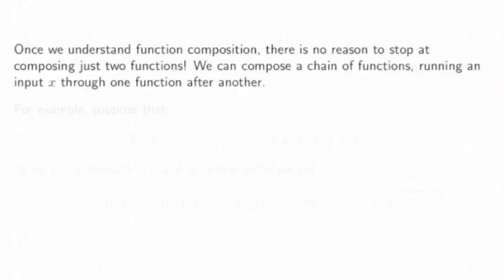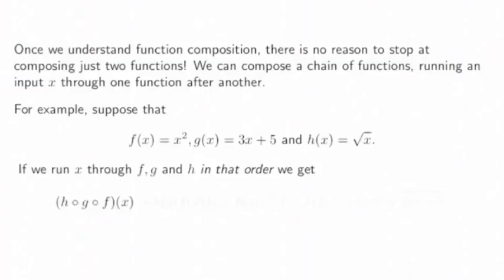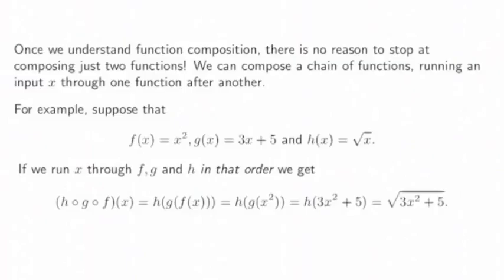Once we understand function composition, there is no reason to stop at composing just two functions. We can compose a chain of functions, running an input x through one function after another. For example, suppose f of x is x squared, g of x is 3x plus 5, and h of x is the square root function. Running x through f, g, and h in that order, we have h composed with g composed with f of x, which equals the square root of 3x squared plus 5.